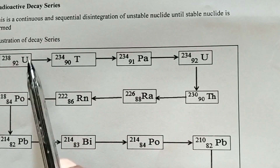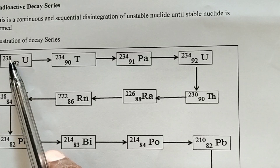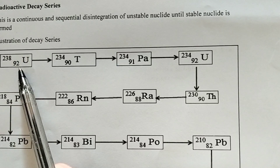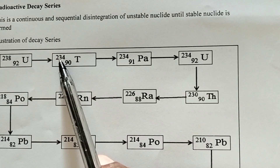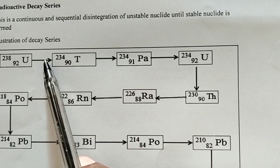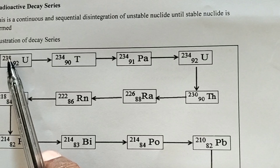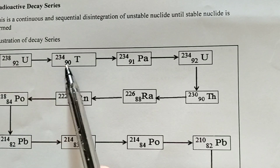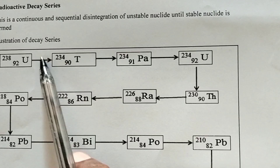Here we have an illustration of a decay series. You can see we have a nuclide of U with a mass number of 238, atomic number 92, disintegrates to form a nuclide of Th with a mass number of 234, atomic number 90. The particle released here is 1 alpha particle, because the mass number has decreased by 4 while the atomic number has decreased by 2.